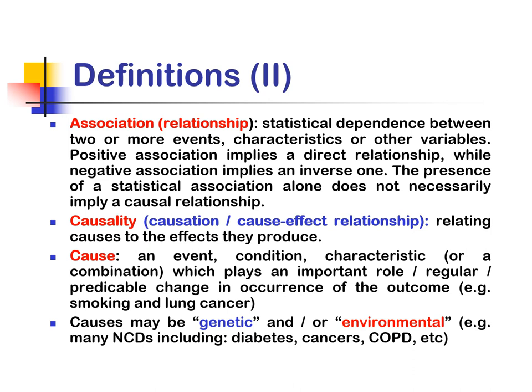The presence of a statistical association alone does not necessarily imply a causal relationship. Causality is either causation or a cause-effect relationship — it relates causes to the effects as they are produced. A cause is an event, condition, or characteristic which may play an important role or change in occurrence of the outcome. Causes may be genetic and/or environmental.